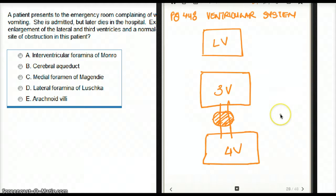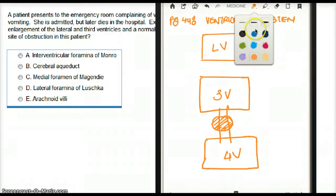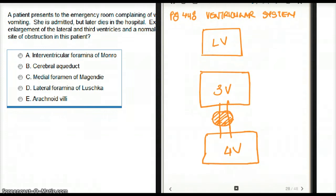Now where exactly is CSF made? CSF is made in the choroid plexus.